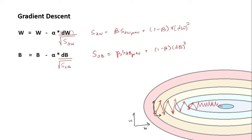So what will happen is that as this movement in the vertical direction is higher, this dW is going to be higher and thus the sdw is going to be higher. And as we're dividing it with the square root of sdw which is higher, this overall quantity is going to be lower.